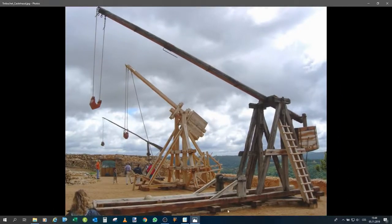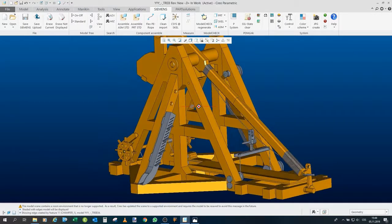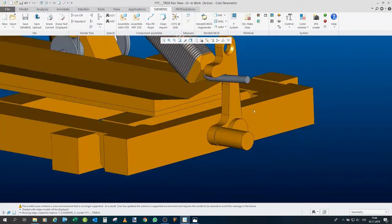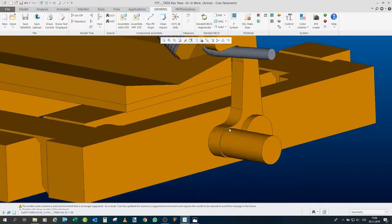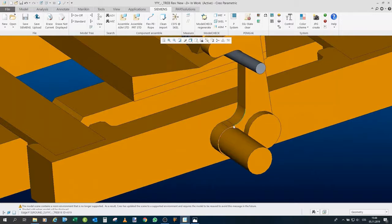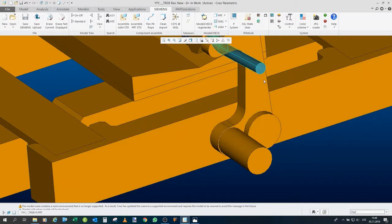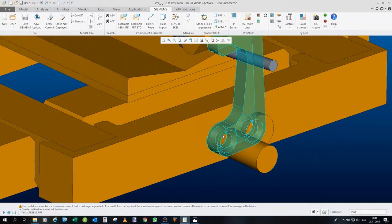So now back to Creo. Now here is the model itself. The difference that I designed from the last time is that this part is now extended and has this hole.